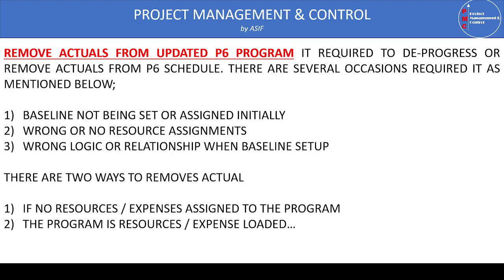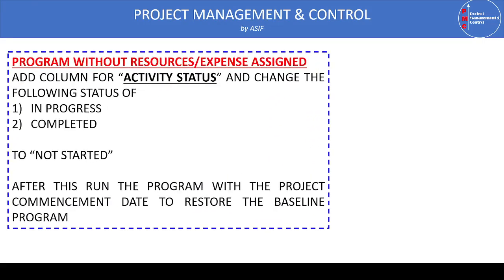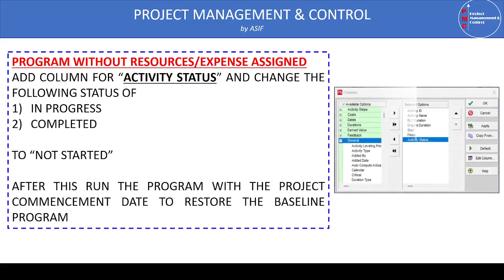This video focuses on programs that are not resource and expense loaded. For programs with no resources or expenses assigned, removing or de-progressing actual dates is very straightforward. We add a column for activity status and then change the status of completed or in-progress activities to 'Not Started', using the fill-down technique to apply this to all activities.